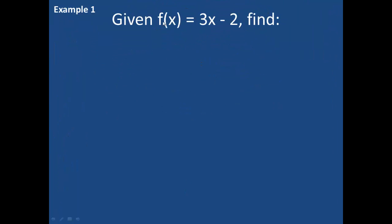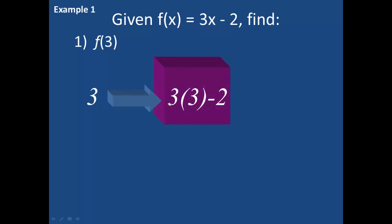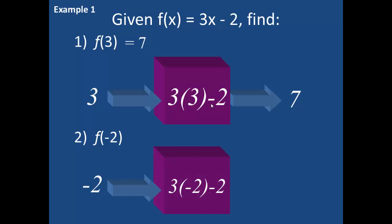For example, if we are given that f of x equals 3x minus 2, this means I have some function in which the output, when given x, is equal to 3x minus 2. So if I am asked to find f of 3, I substitute 3 for x, getting 3 times 3 minus 2, which yields an output of 7. So f of 3 equals 7. If asked to find f of negative 2, I substitute negative 2 for x: 3 times negative 2 minus 2 gives an output of negative 8. So f of negative 2 equals negative 8. You can use a single function and allow x to be any real number and you will always get an output.